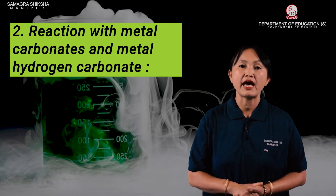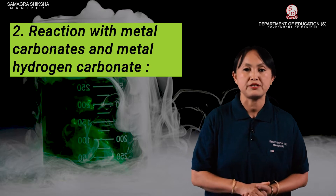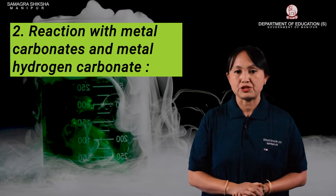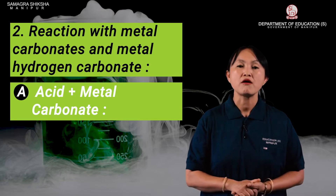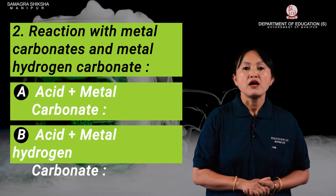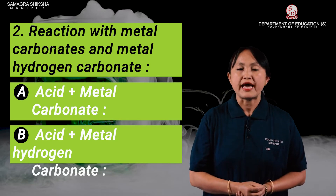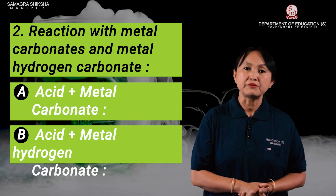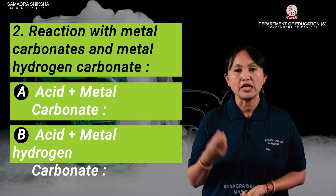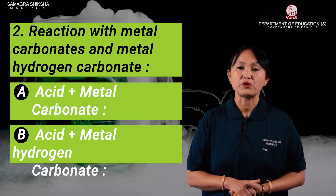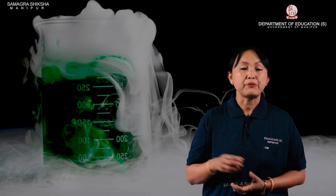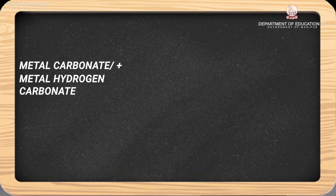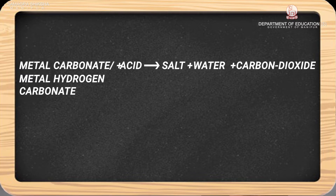The next property involves metal carbonates and metal hydrogen carbonates. When an acid reacts with a metal carbonate or metal hydrogen carbonate, the reaction results in formation of salt along with water and the liberation of carbon dioxide gas. Metal carbonate plus acid gives salt plus water plus carbon dioxide.